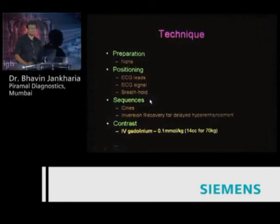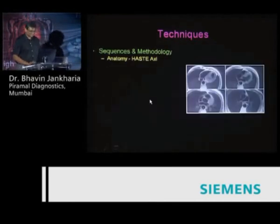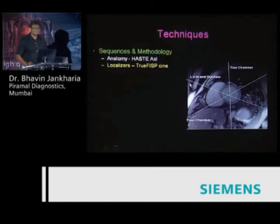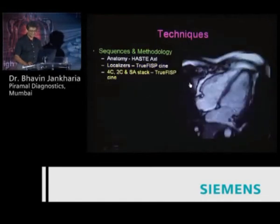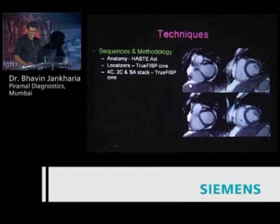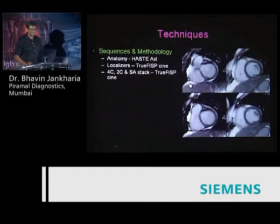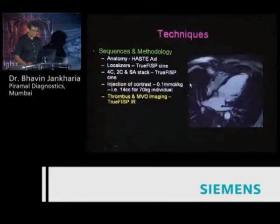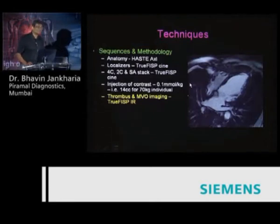Give intravenous contrast at 0.1 mmol per kg body weight — don't skimp on contrast for cardiac MR. The first thing we do is get the HASTE black blood images, which give a basic overview of what is going on. Then you do the localizers, and based on those you do the 4-chamber view, the 2-chamber, and the short axis stack. These are all True FISP images — white blood images that give a sense of systolic function. Then inject contrast at 0.1 mmol per kg body weight and immediately do the delayed hyper-enhanced images.